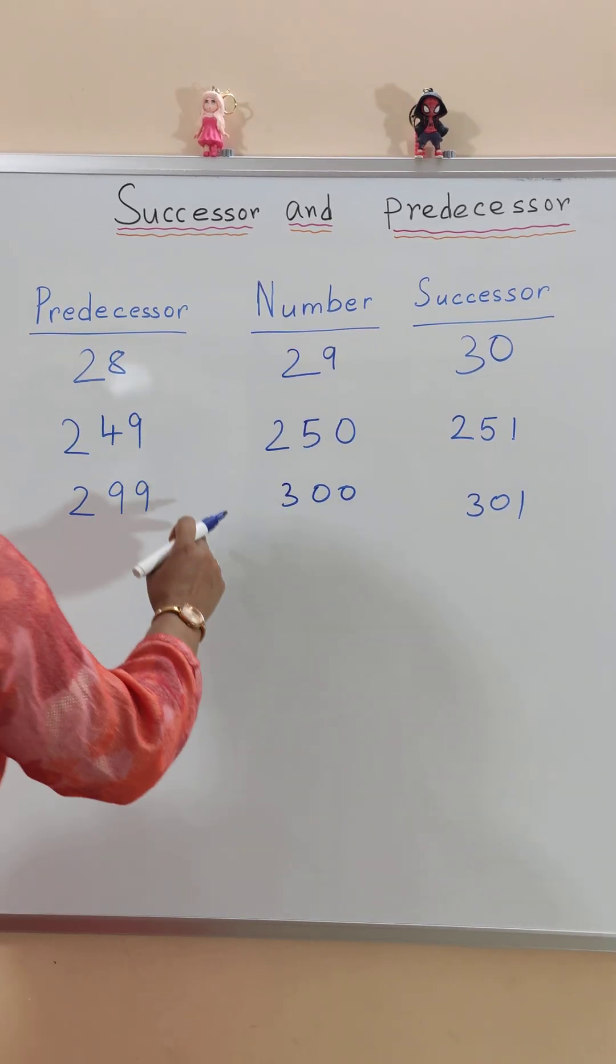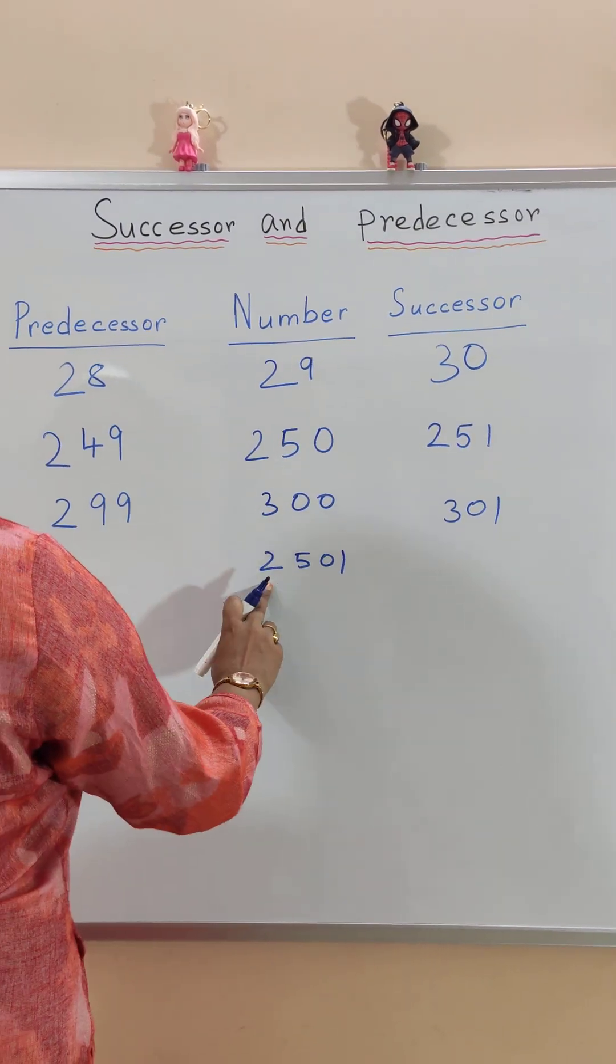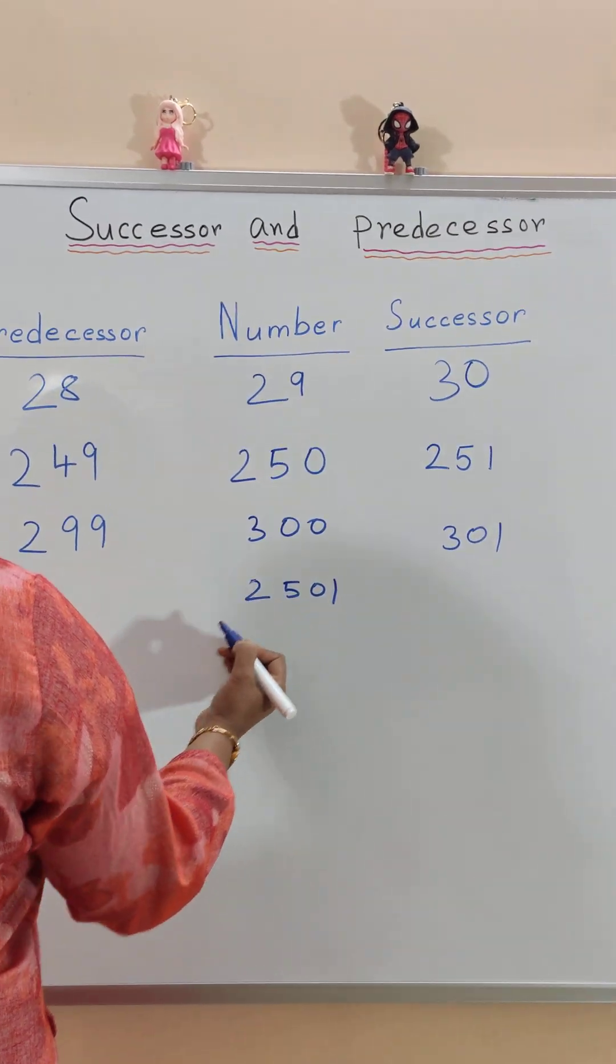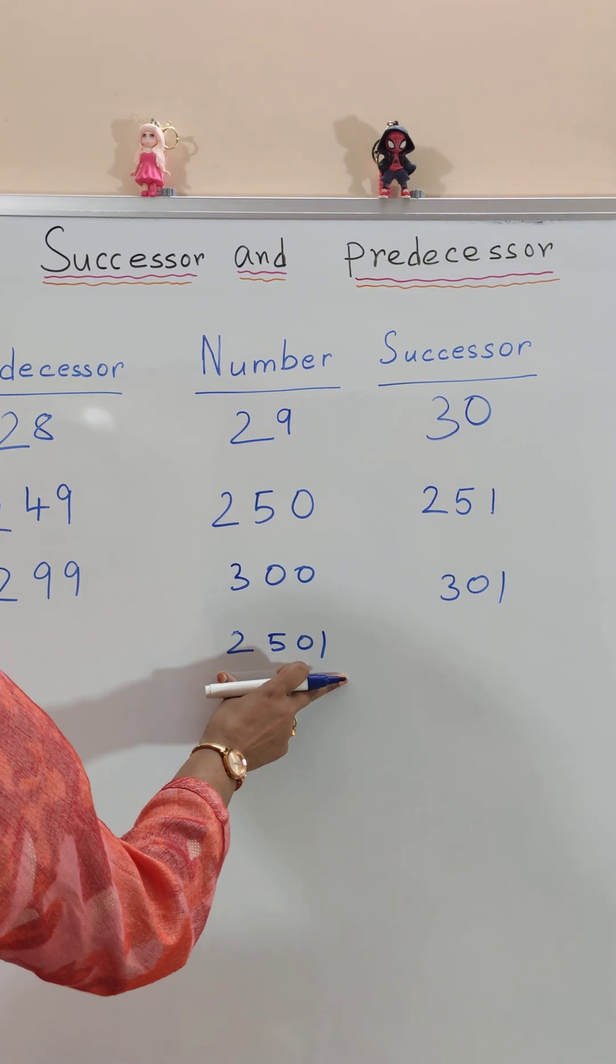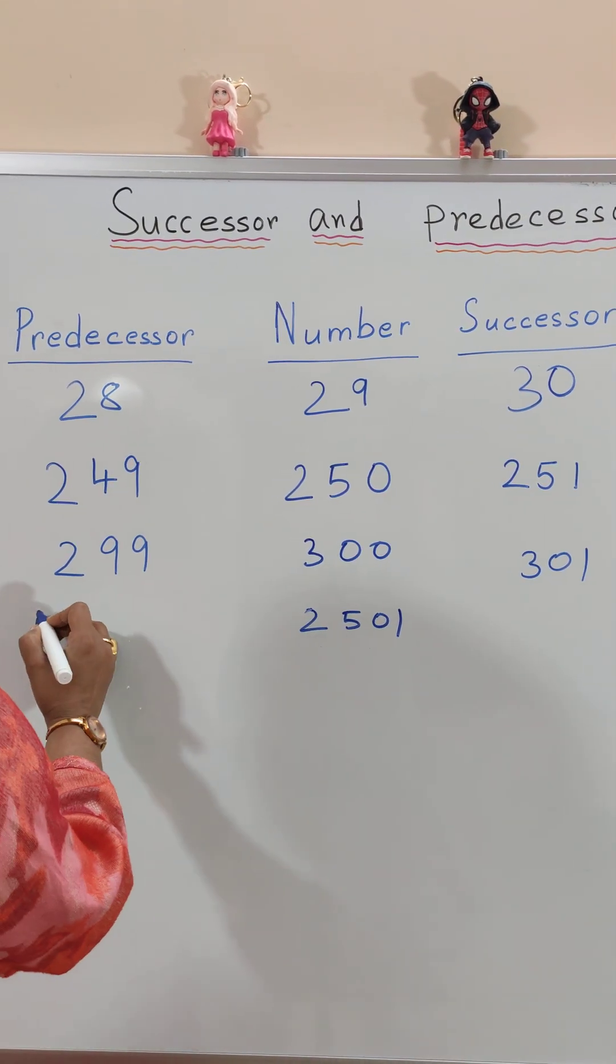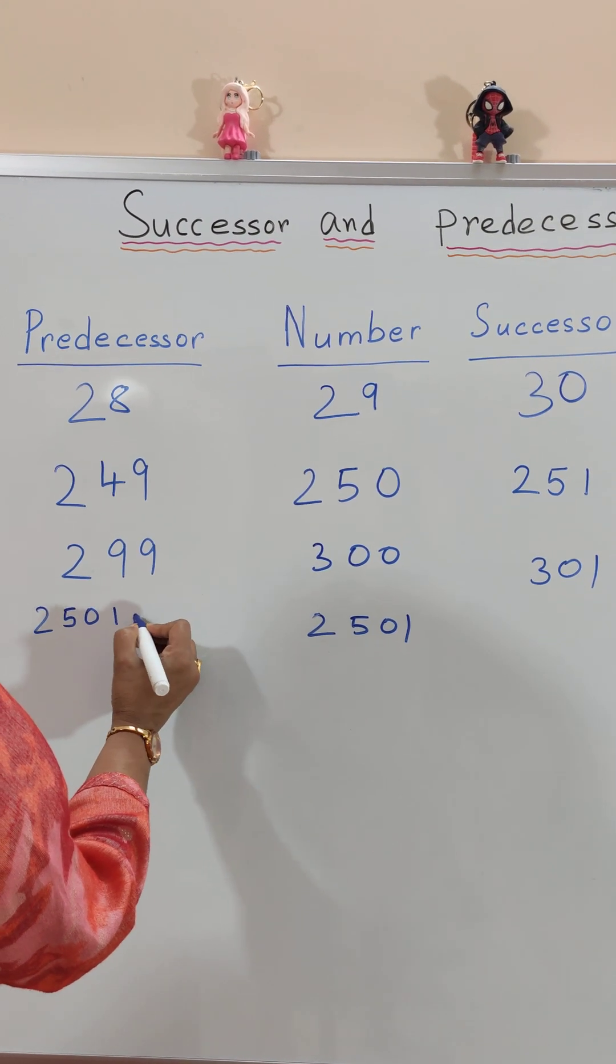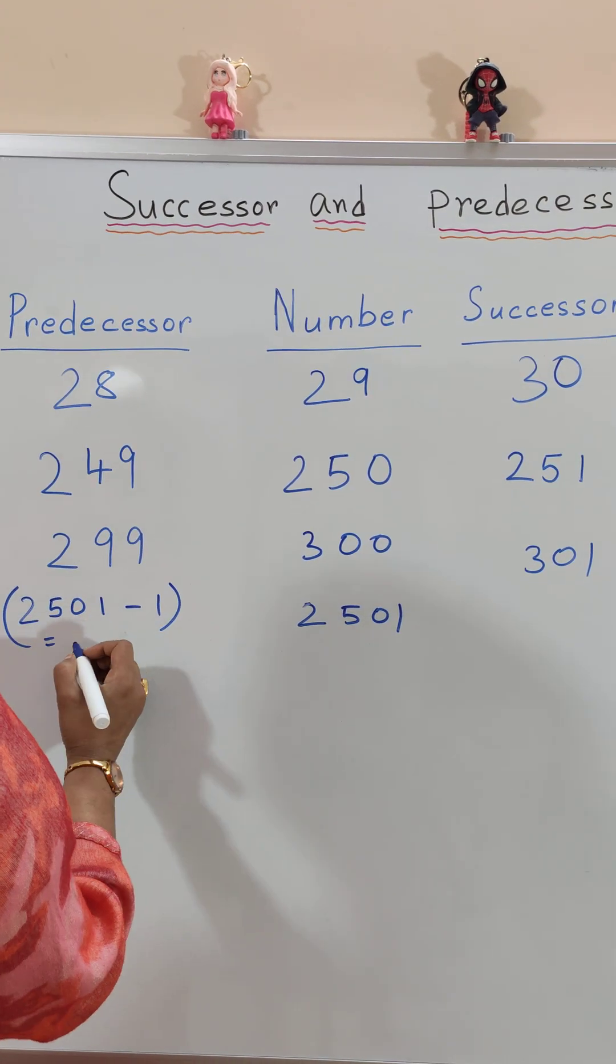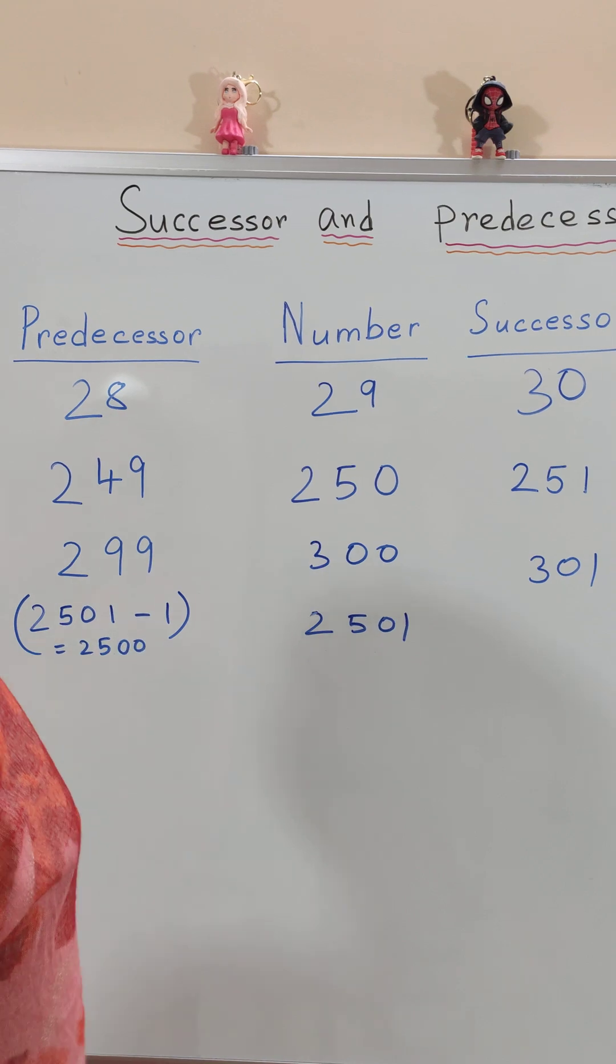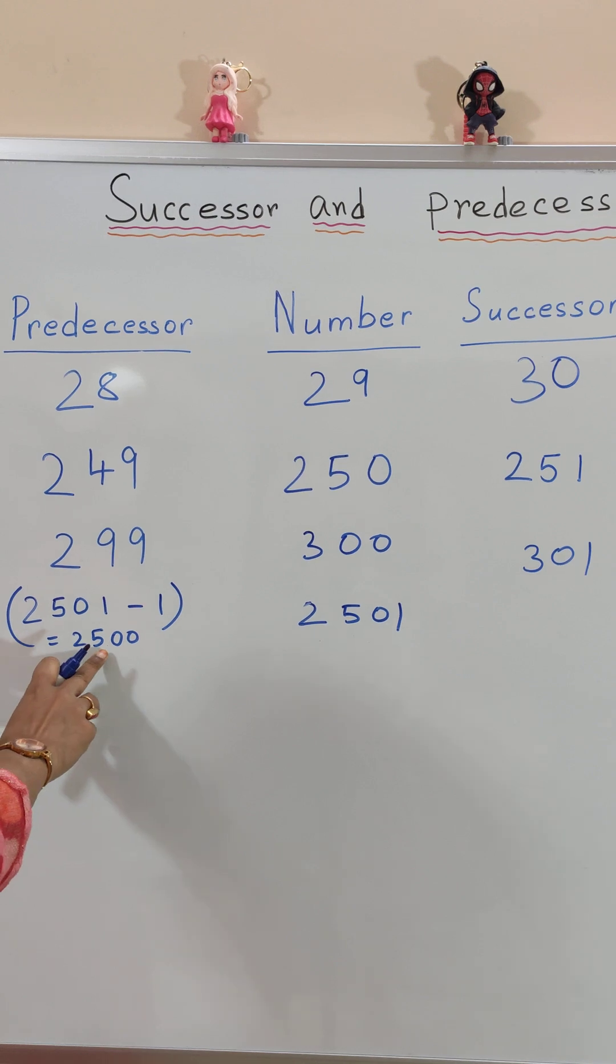Let me show you another example: 2501. So the predecessor of 2501, this is a four-digit number. So if we are confused how to find the predecessor, we can easily do the subtraction. That is 2501 minus 1 which is equal to 2500. So the predecessor of 2501 is 2500.